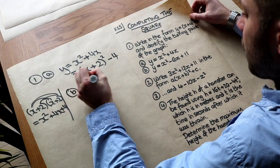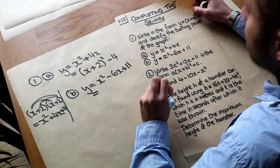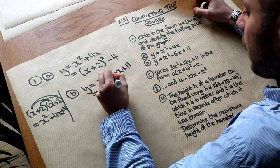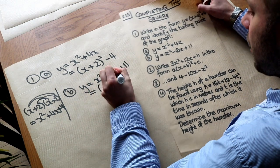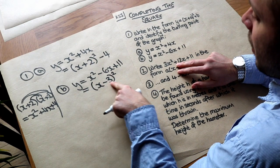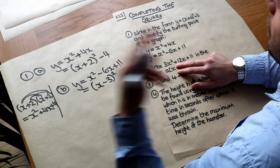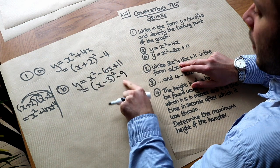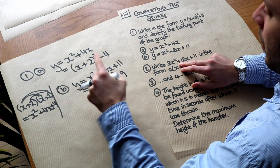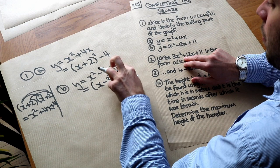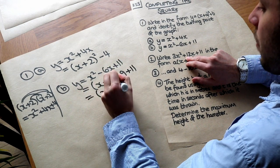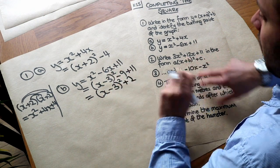For the next one: y equals x squared minus 6x plus 11. We halve the coefficient of x, so it's x minus 3, all squared. The quick method: square that number — minus 3 squared is 9 — and subtract it. That minus 9 cancels the plus 9 in the expansion, leaving x squared minus 6x. Adding the plus 11 gives x minus 3 squared plus 2.